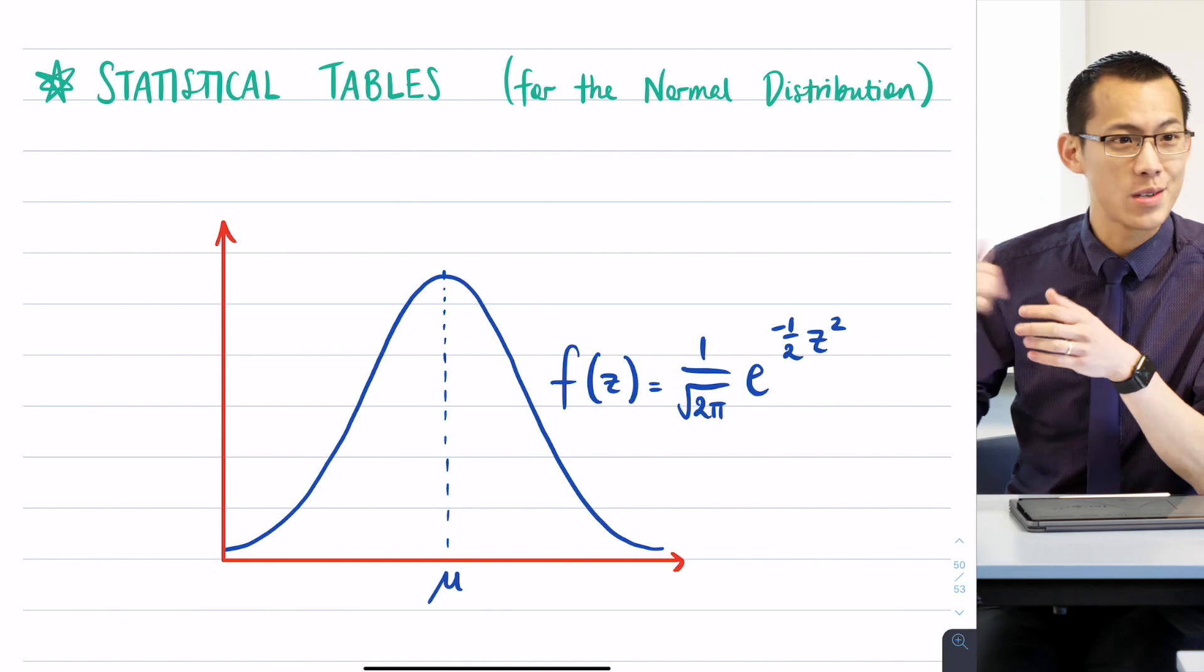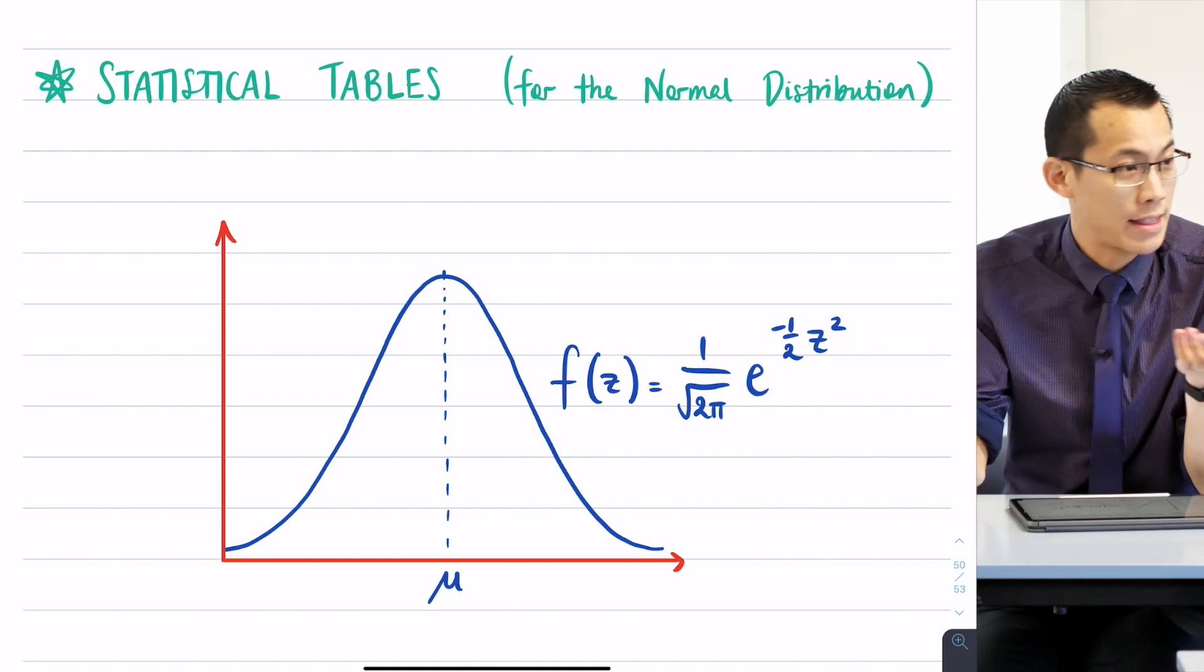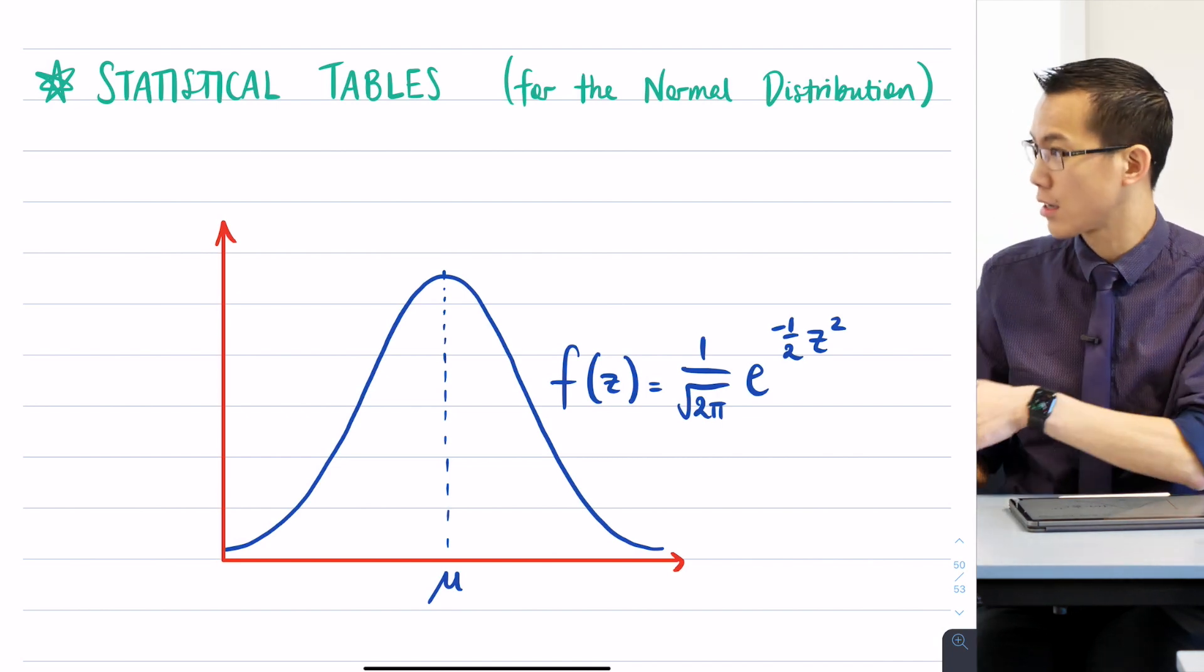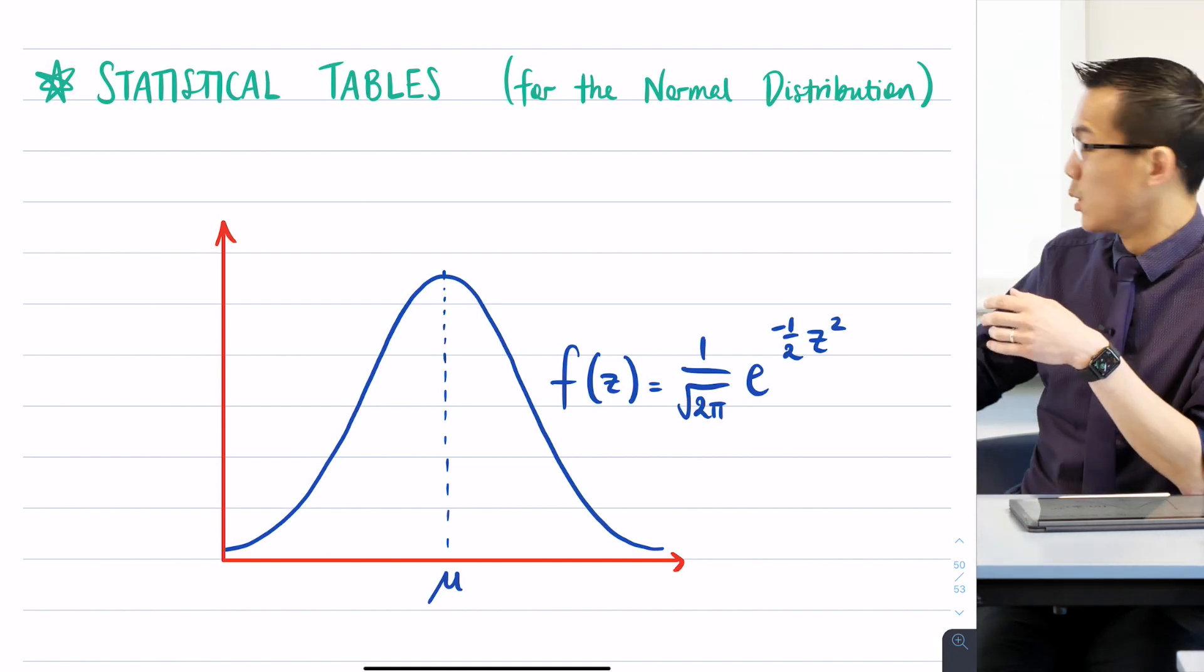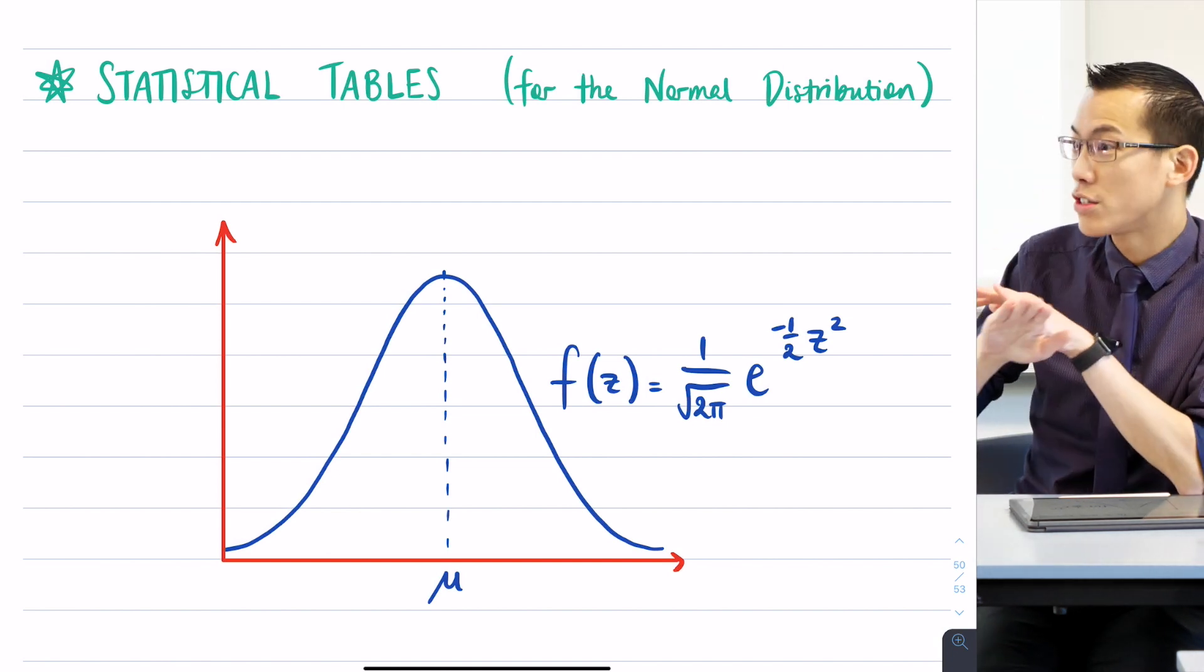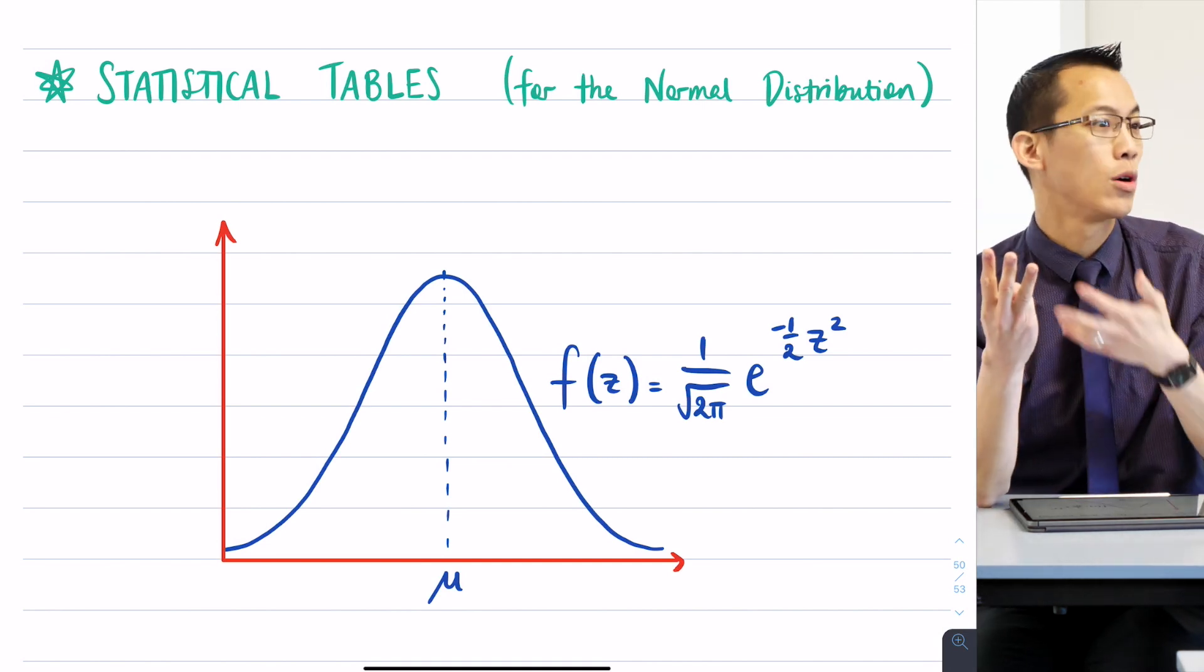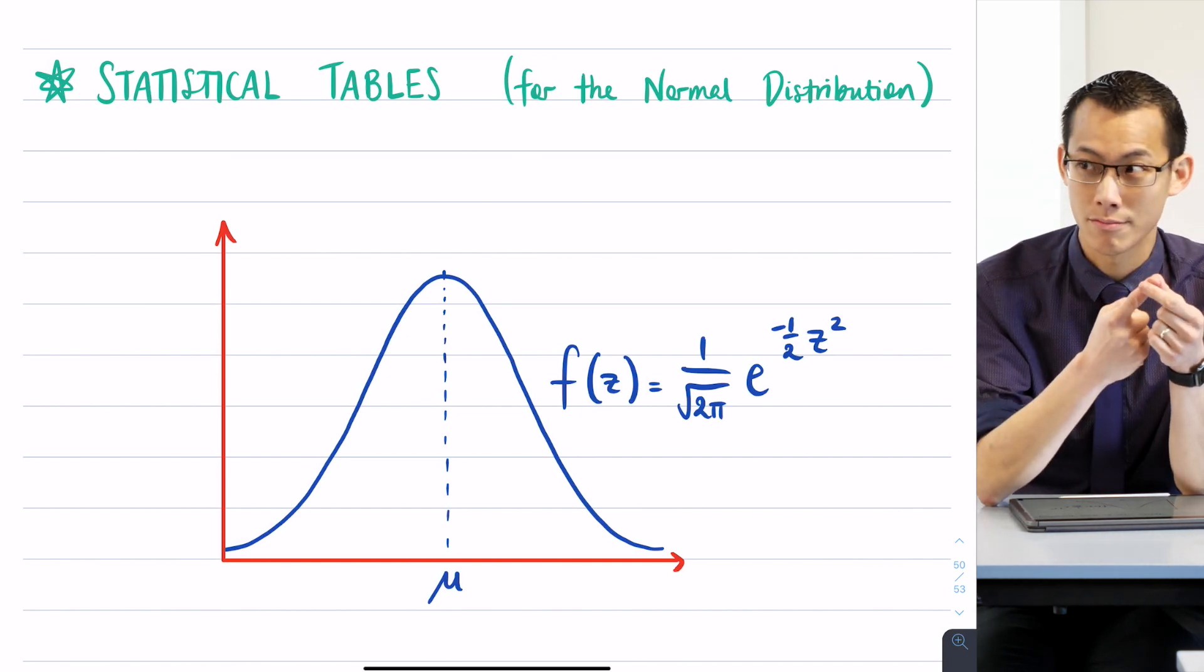We then said once you get this guy, if you want to work out probabilities underneath this, you have to integrate. That's how we use the probability density function. Areas under curves give us probability and then we landed on this problem. We looked at this function and we were like, gross, don't want to integrate it. So I told you right at the outset there were three ways to solve this problem and they all started with T. The first one was...